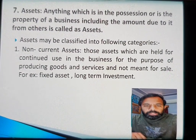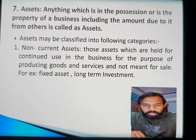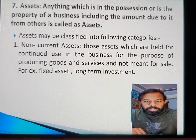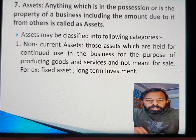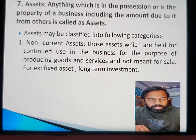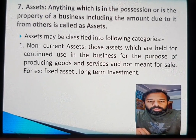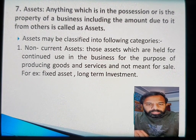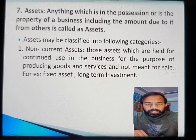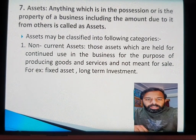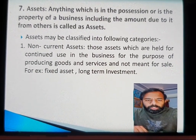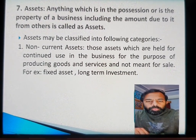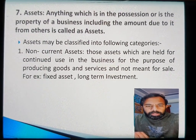Asset is further divided into two parts: non-current asset and current asset. Non-current asset means anything which is used for producing goods and services and which is purchased not for resale purpose. In other words, anything held for continuous use for the purpose of producing goods and services and not purchased for resale — these are all non-current assets.